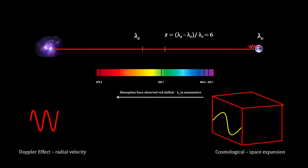In this hypothetical example, we have an object with a redshift equal to 6.